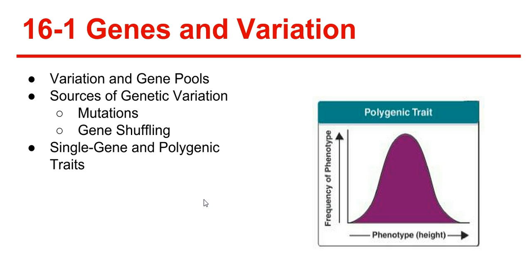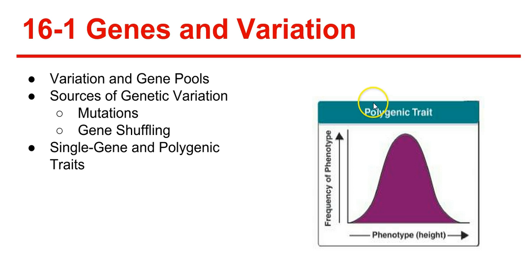As a result, one polygenic trait can have many possible genotypes and phenotypes. The graph here shows the distribution of phenotypes — in this case height — expected when many genes contribute to a trait. The highest number of individuals are in the middle at average height, while a few individuals are taller and a few are shorter. This is called a bell curve because of its bell shape.